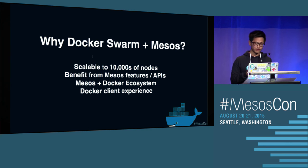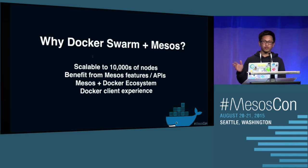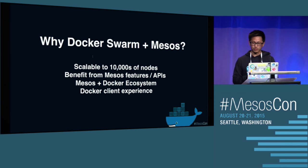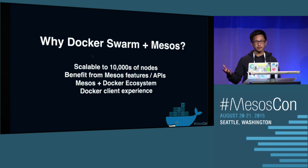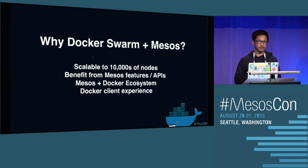So why Docker Swarm on Mesos? Docker Swarm gives you a really nice experience. If you already know how to use the Docker client — Docker run to launch containers, Docker build for images, push to a registry — the whole workflow has been phenomenal. But when it comes to running on a cluster at scale, if you want a thousand nodes running your containers in a huge data center, this is where Mesos's strength comes in. We've been battle-tested and used in production in many different places — with thousands of machines, even 100,000 machines.